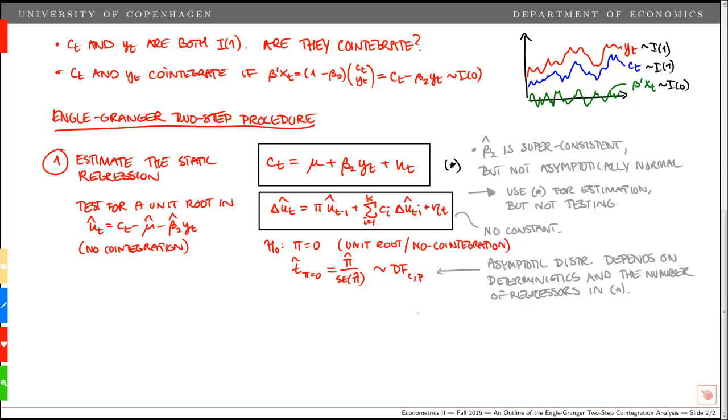So this was the first step. If we find cointegration, we continue to the second step, and then we estimate an error correction model, an ECM, given the error correction term t-1, which is ut-1 hat. What we do here is we simply take the residuals from the static regression up here, fix them, and we define that as our error correction term. That will define the estimated deviation from the long-run equilibrium in the last period. Here we have exploited the fact that we have a super consistent estimator of beta 2. So we simply use that to fix the ECM term and then include it as a regressor and specify an error correction model for ct.